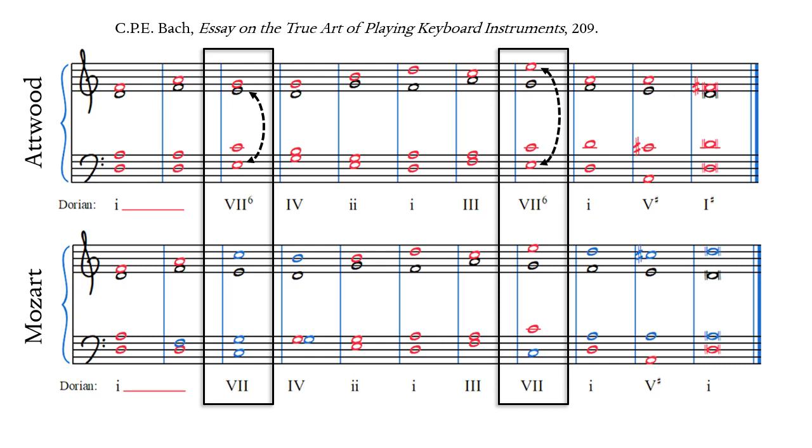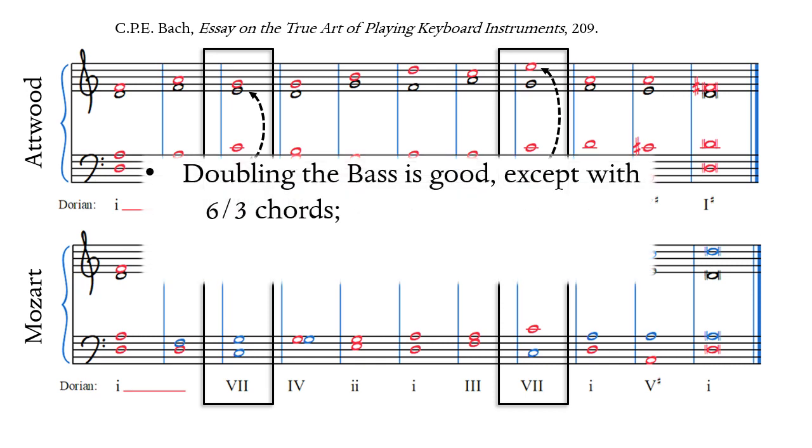In general, we can make two rules of thumb about doubling. First, doubling the bass voice is almost always a good idea, except with 6-3 chords. And second, avoid doubling active scale degrees like the leading tone at a cadence. Tendency tones have a will of their own, and one of the doubled voices will have to move awkwardly in order to avoid parallel octaves.